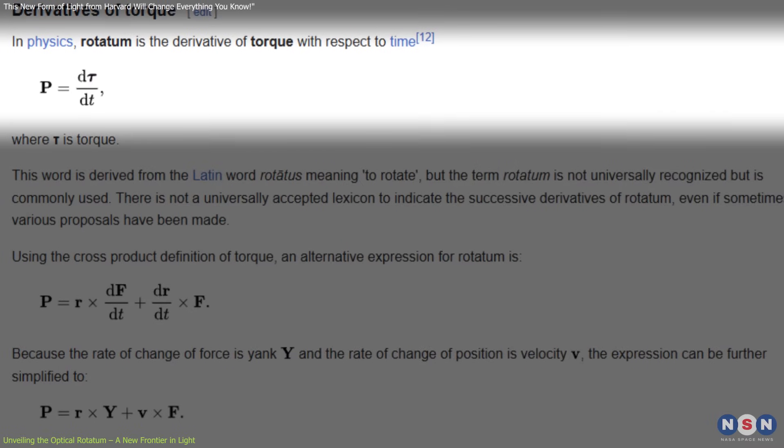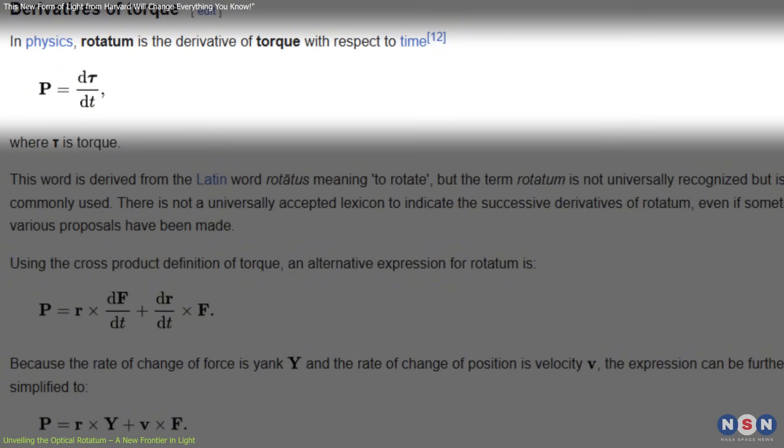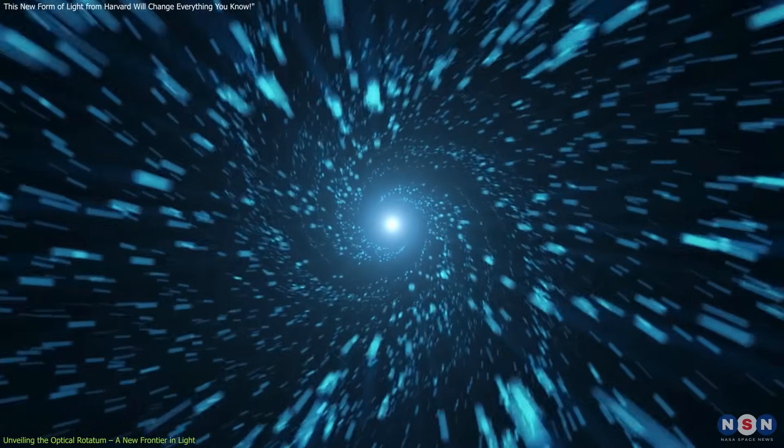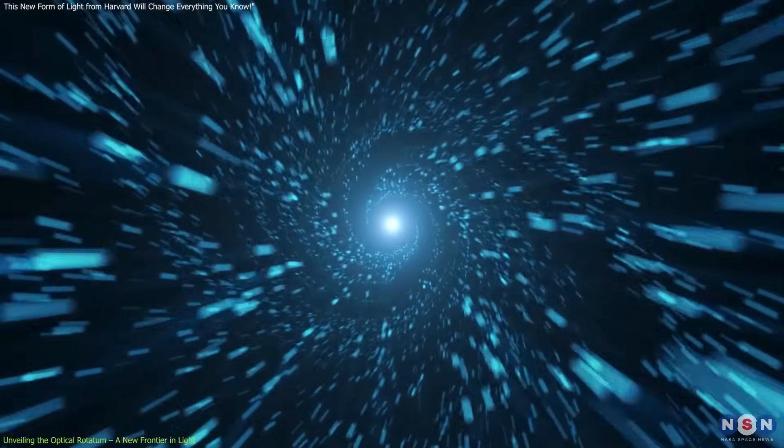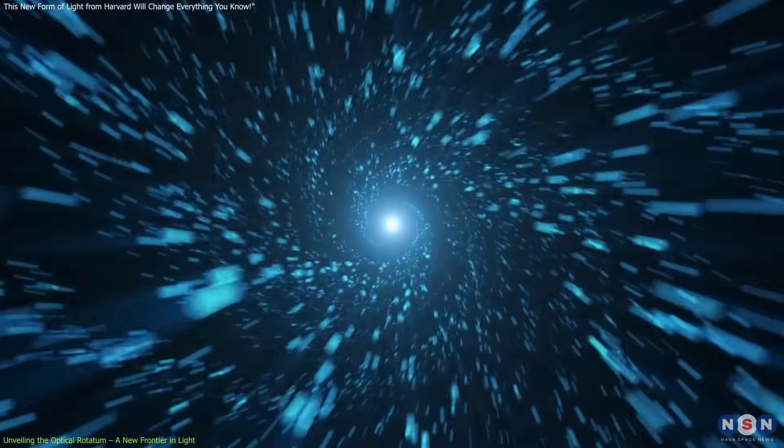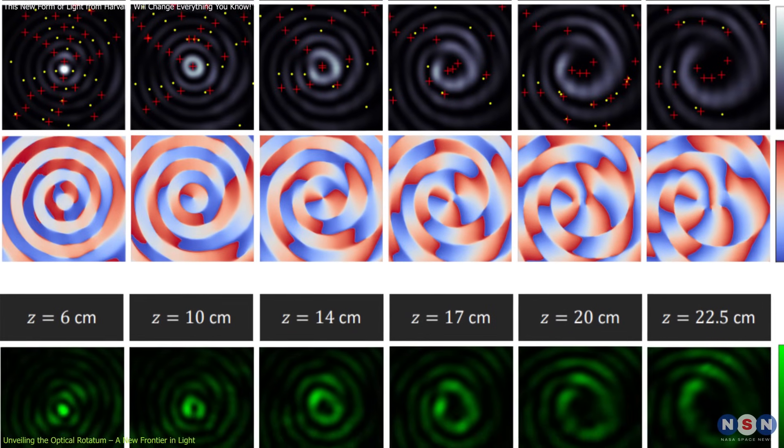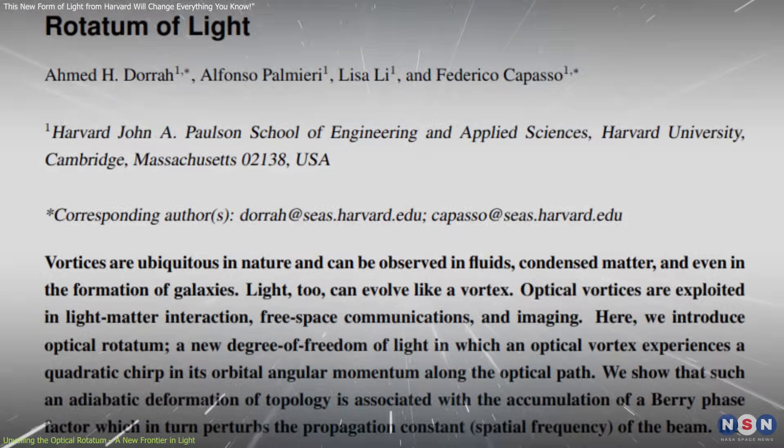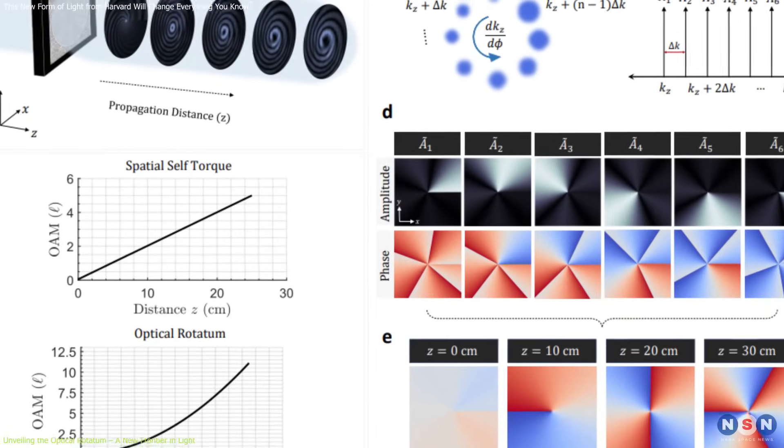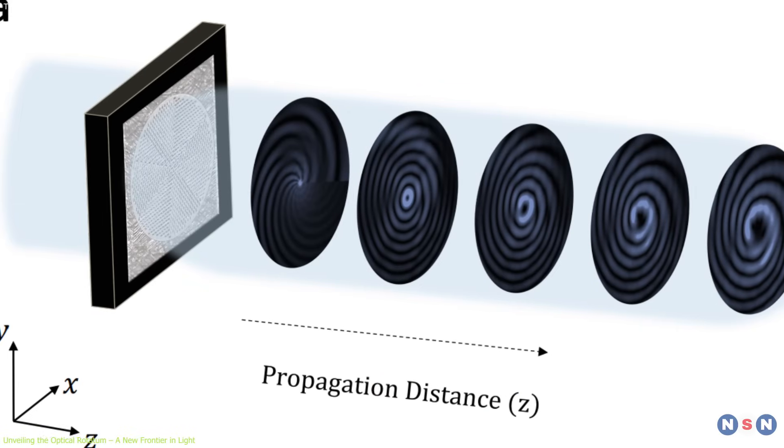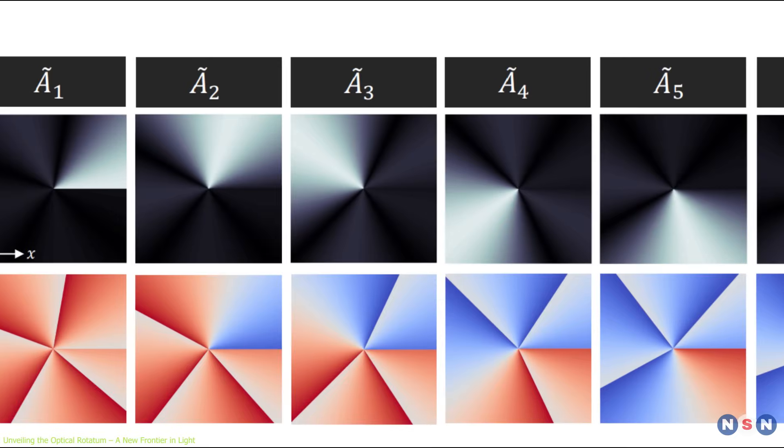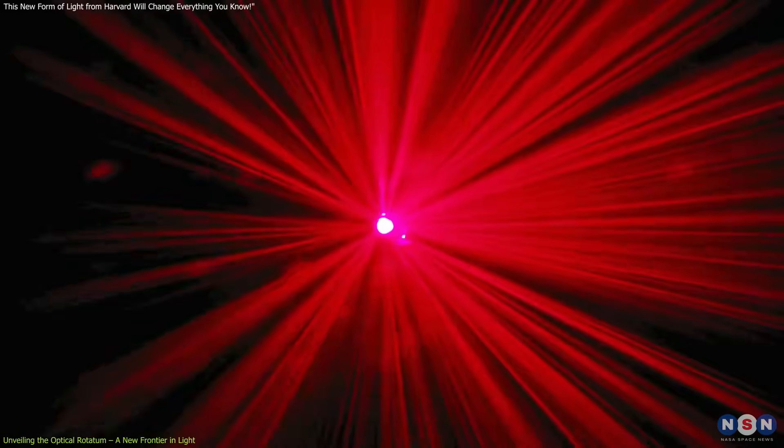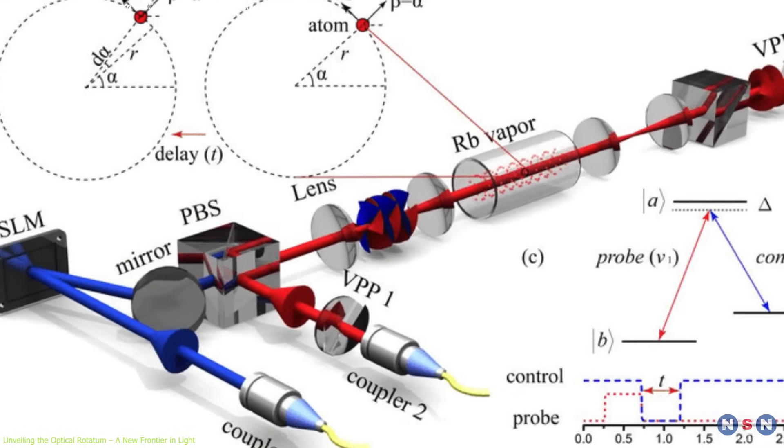The term rotatum is borrowed from classical mechanics, where it describes the rate of change of torque over time. In this optical context, it signifies how the torque, or twisting force, of the light beam evolves as it moves. This dynamic behavior is not just a theoretical concept. It has been realized experimentally using a simple setup involving a liquid crystal display and a low-intensity light beam, making it more accessible than previous methods that required high-intensity lasers and complex equipment.